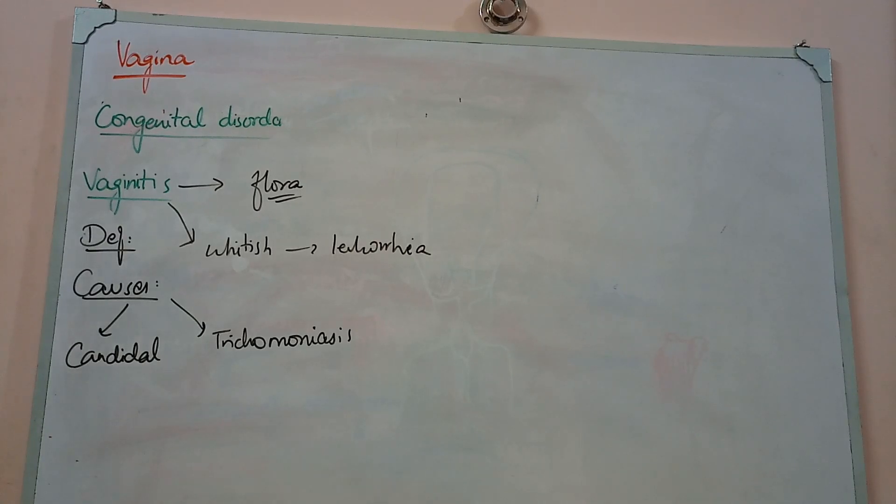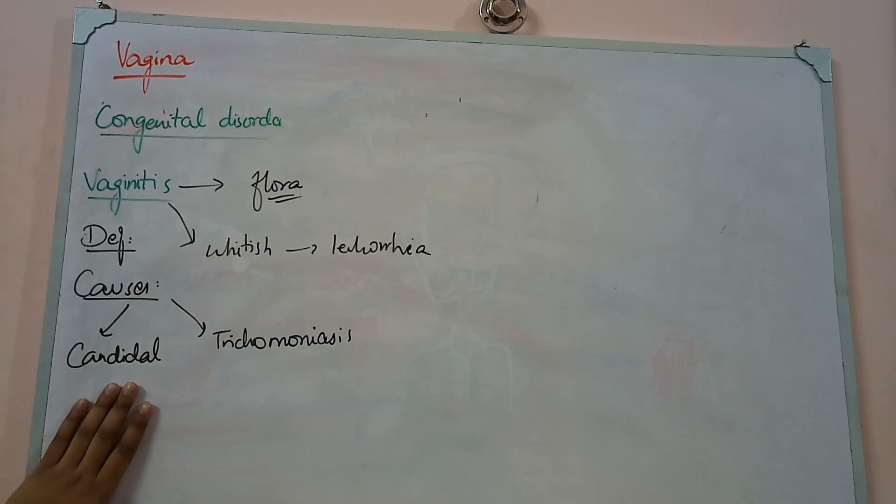In our vagina, we have normal flora of organisms. When there is diabetes, pregnancy, or another immunodeficiency state, our bacteria which are normal flora can activate and cause infection and inflammation. The most common is fungal Candida infection. Candida albicans is part of normal flora and causes very common infection.